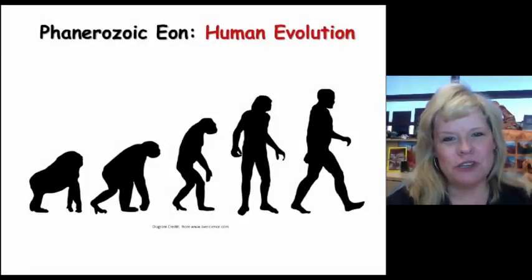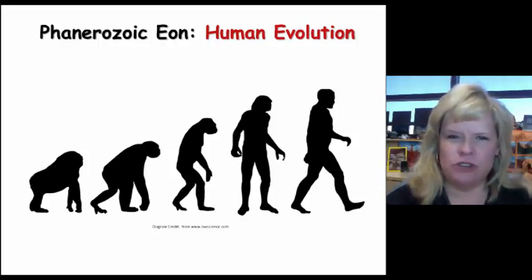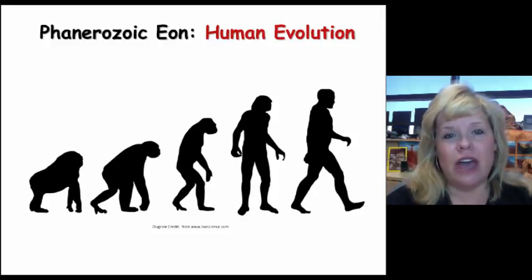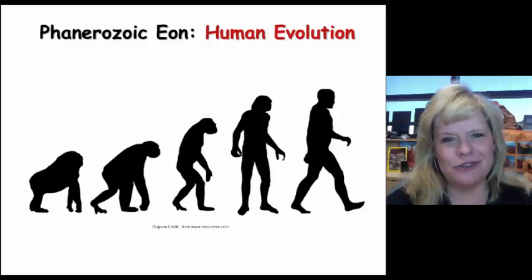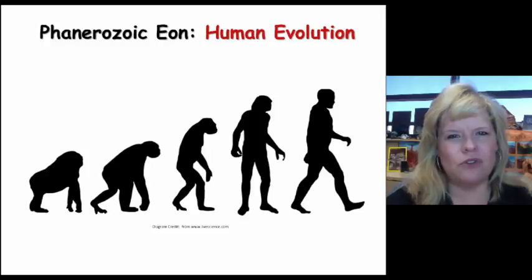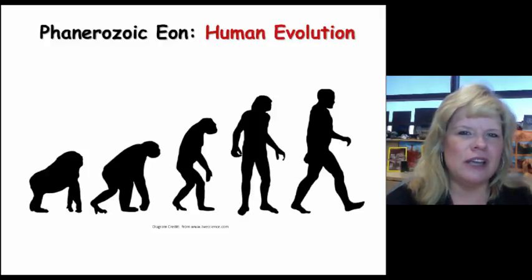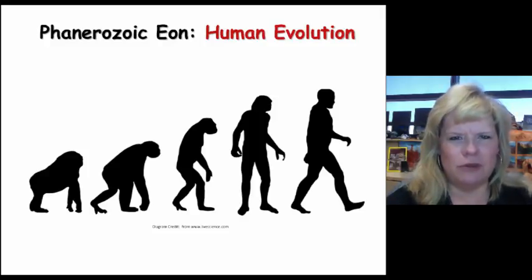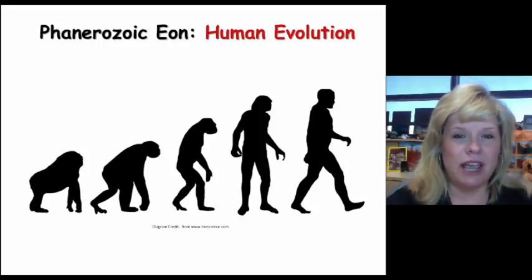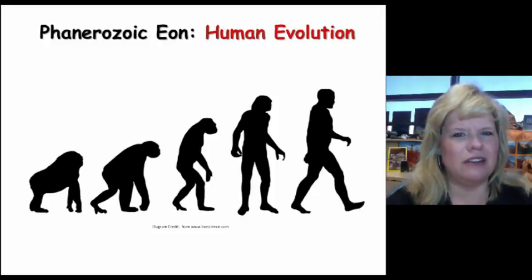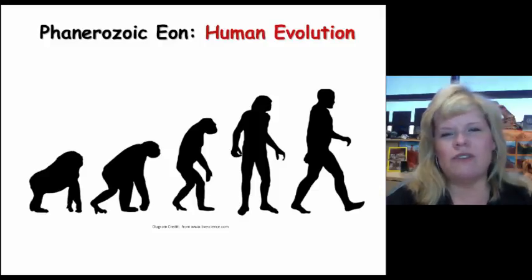Greetings, geologists, and welcome to hominid evolution. We're going to be looking at one of the most interesting parts of the geologic time scale: how did we come about? Where do we fit in this realm of evolution in terms of organisms that diverge from some kind of single ancestor? We've looked back throughout geologic time since the Precambrian earlier in the semester, and here you are at the very tail end of the Cenozoic in the Miocene, looking at the start of human evolution.